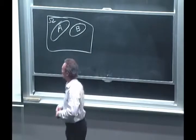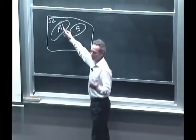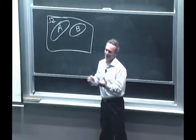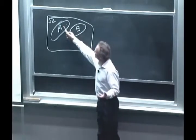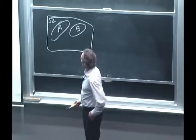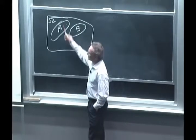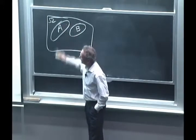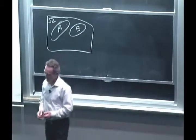So probabilities behave like masses. The mass of the objects consisting of A and B is the sum of the masses of these two objects. Or you can think of probabilities as areas. They have, again, the same property. The area of A together with B is the area of A plus the area of B.